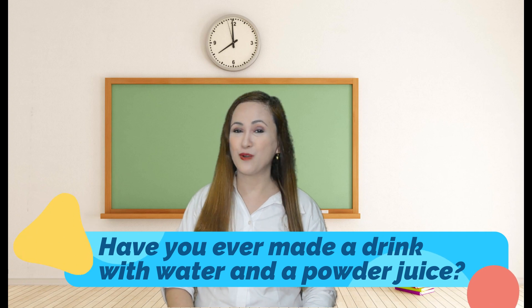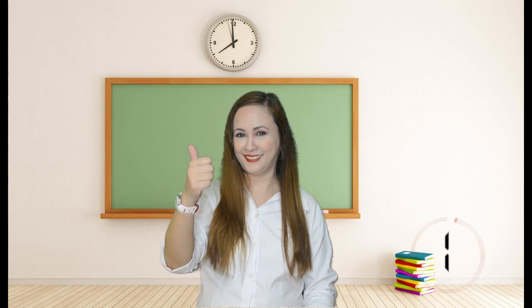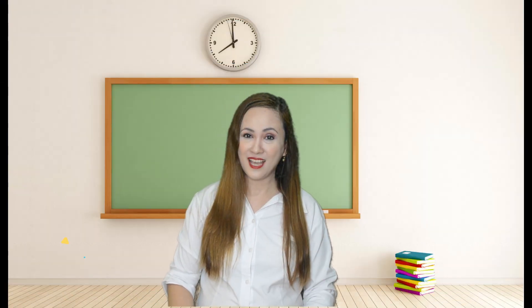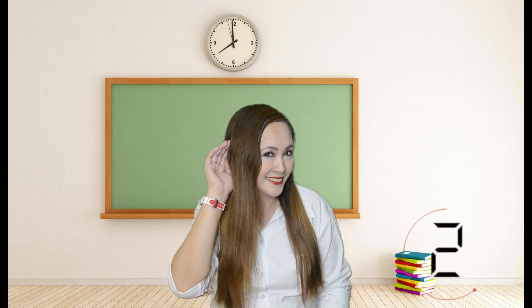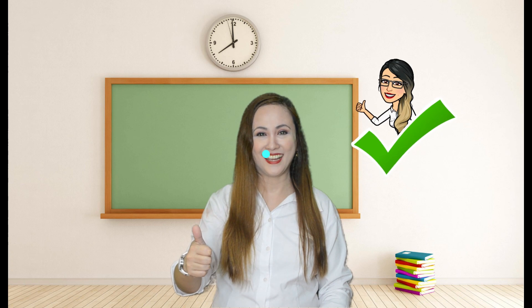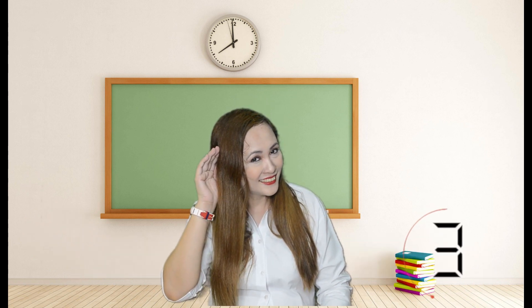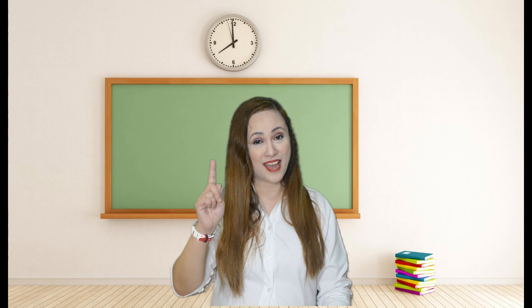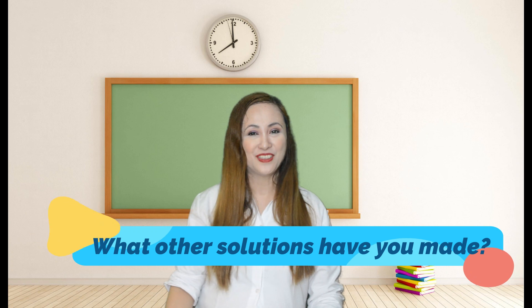Have you ever made a drink with water and a powder juice? This is an example of a solution. What does a powder drink look like after you stir it in water? It probably is all the same color and consistency. And that is one characteristic of a solution — that it is homogeneous, or that it is uniform throughout. What other solutions have you made?